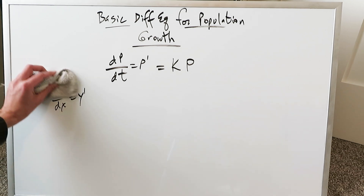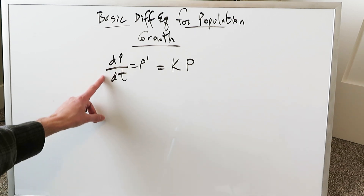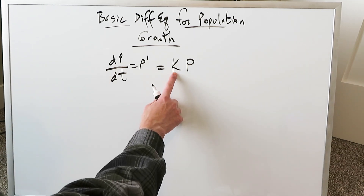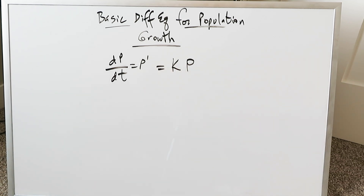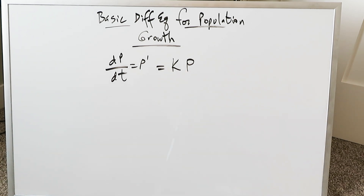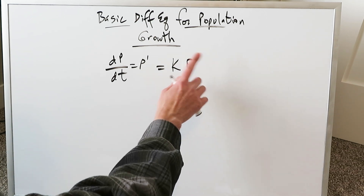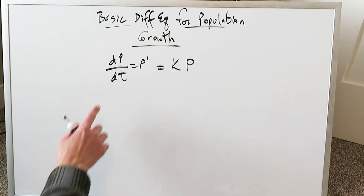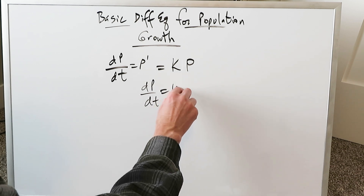Just as you were seeing dy/dx equal to y prime, here we can write dp/dt equal to p prime. dp/dt, change in population over change in time, is proportional to kp. The k here represents the rate constant, and p implies your initial starting population. This gives us our differential equation: dp/dt is equal to kp.